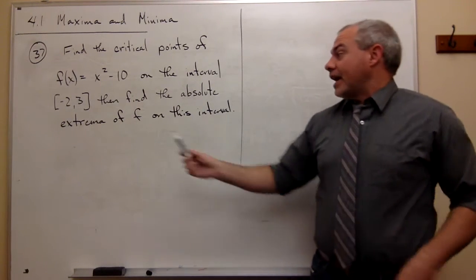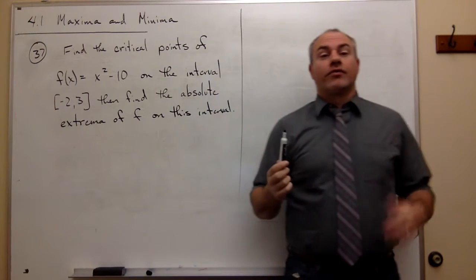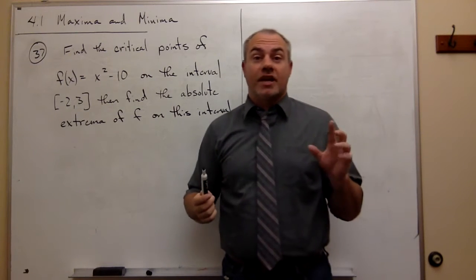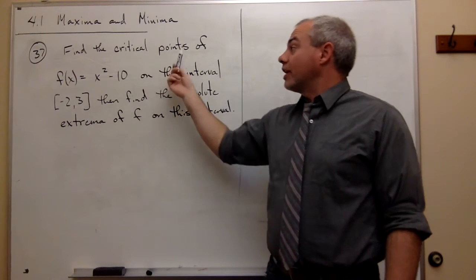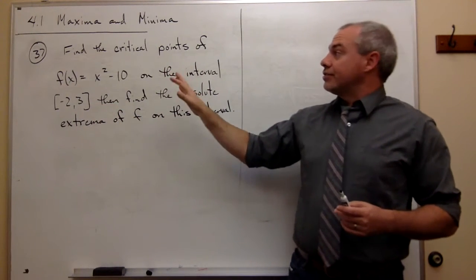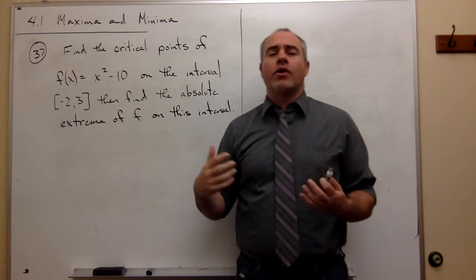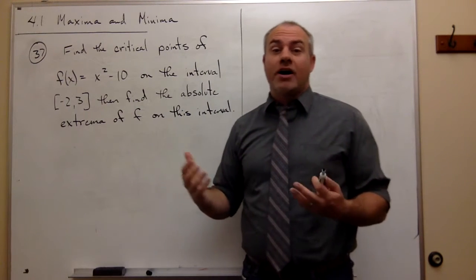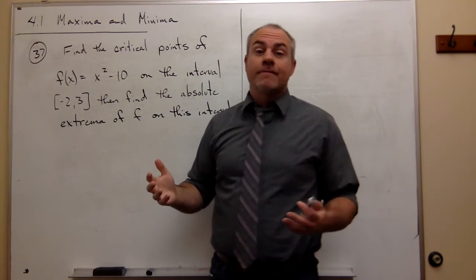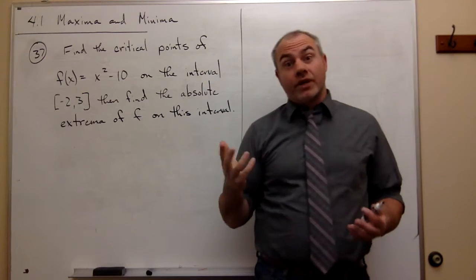Anytime that we want to find the absolute extrema of some function on some closed interval, there are really two places where those absolute extrema can occur. The first place is at an actual critical point of the function that lives inside of that interval. It's important to say inside that interval because it is possible to find critical points outside that interval, and we just don't care about those. We only care about the critical points inside this interval.